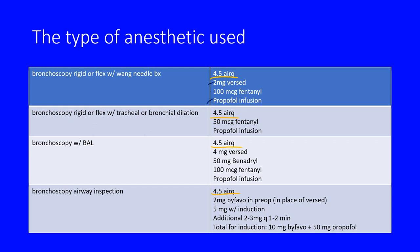In our bronc labs we tend to run propofol infusions because the airway is open half the time. You constantly have seal leaks and have to run higher flows, so there's a chance of not providing adequate anesthesia with a volatile anesthetic. It's safer to run propofol. Also, these procedures tend to be quick — you turn off the propofol and in five to ten minutes they'll burn through it and you're fine, as opposed to a volatile, which depends on the adequacy of their respirations.